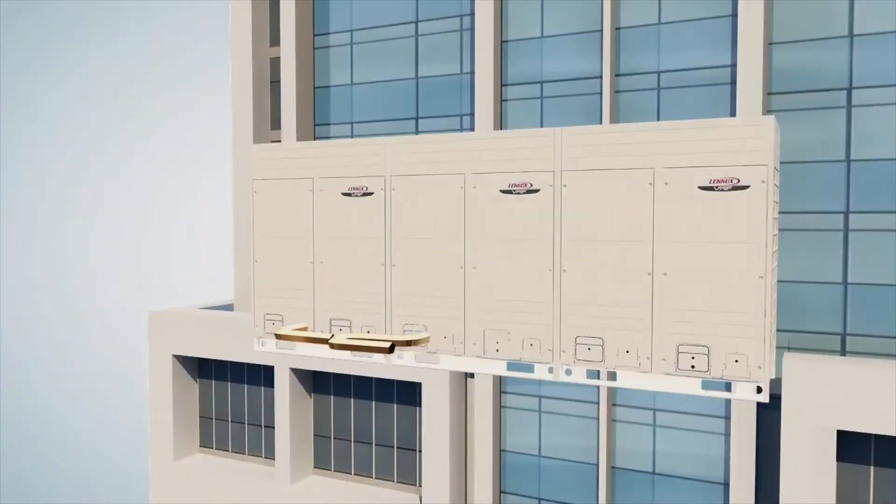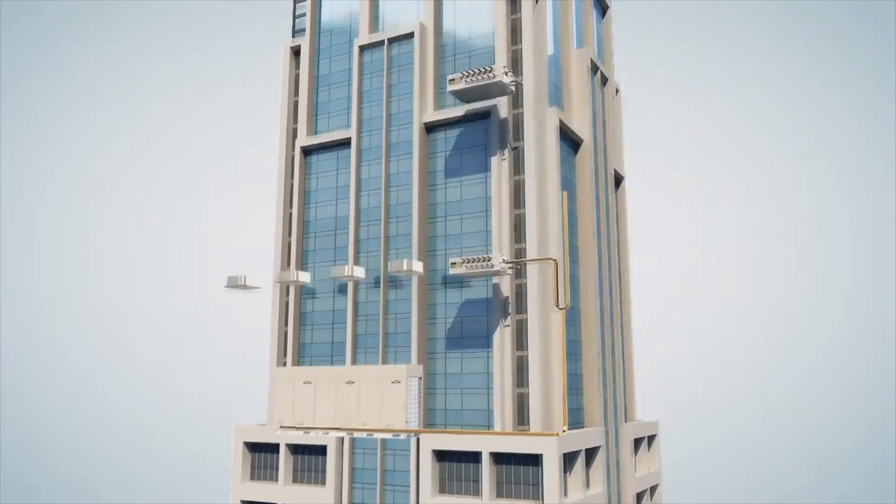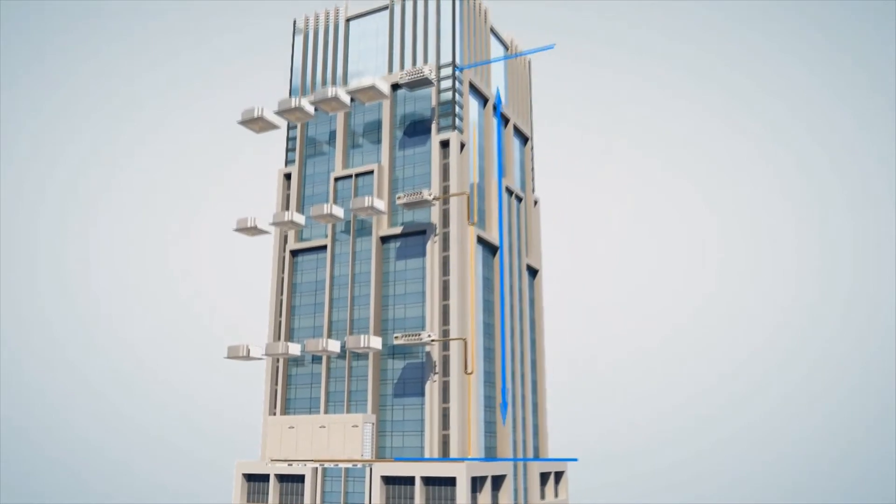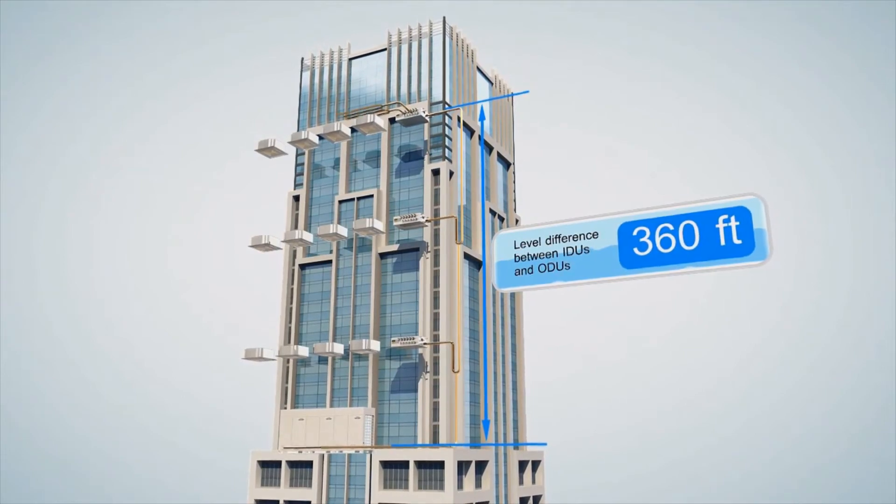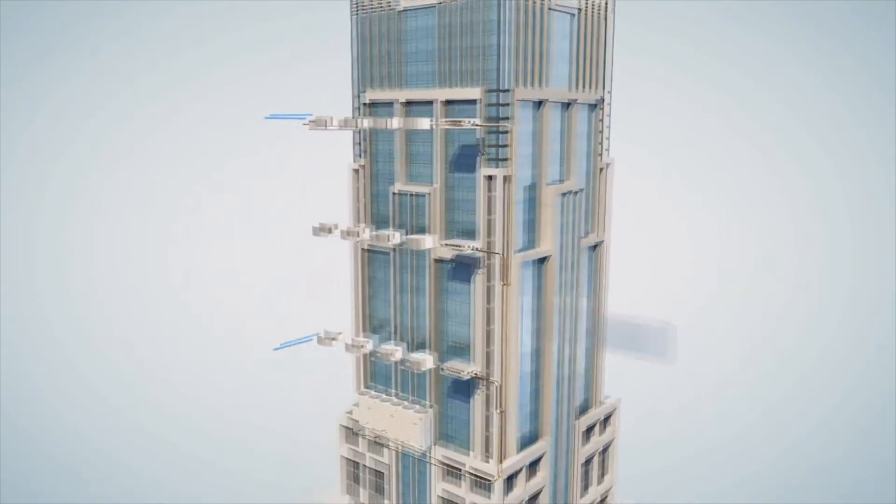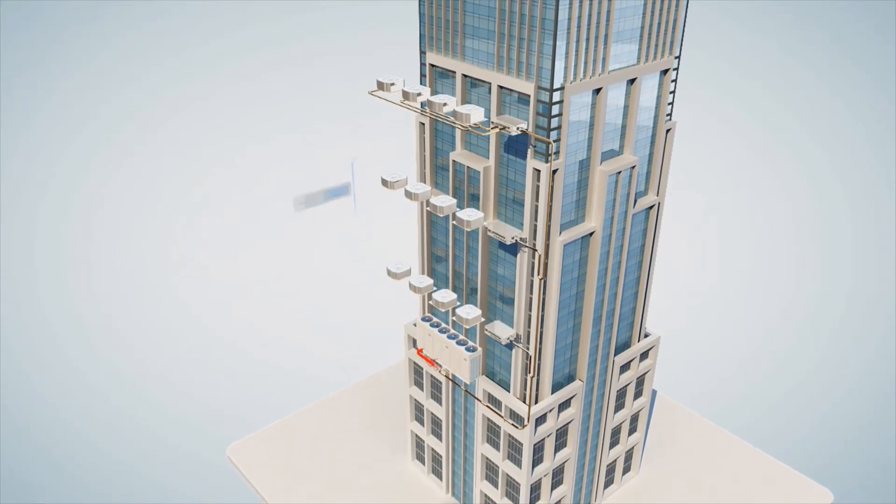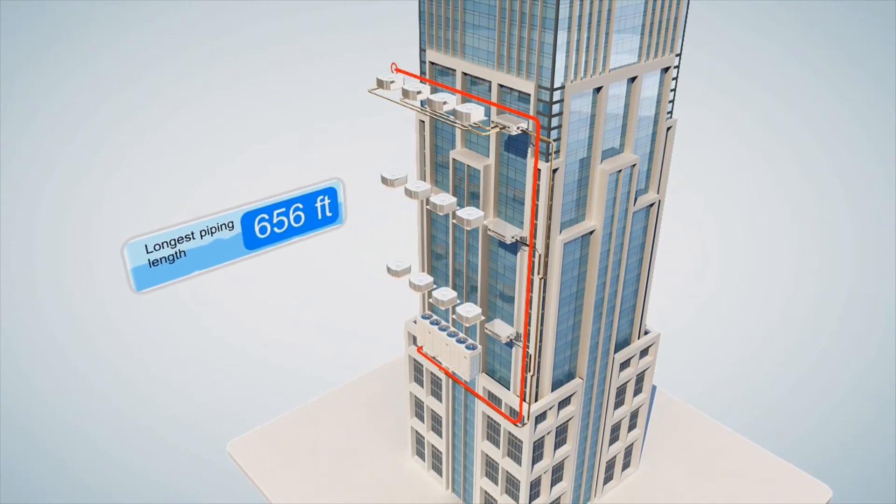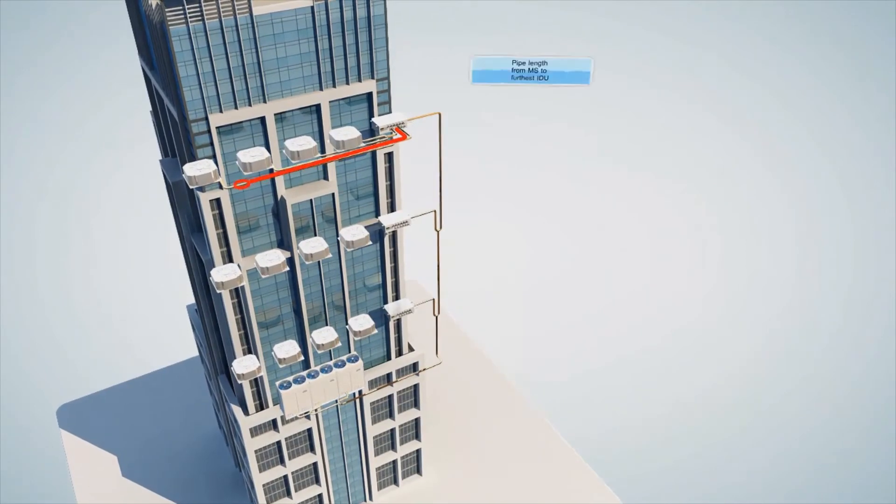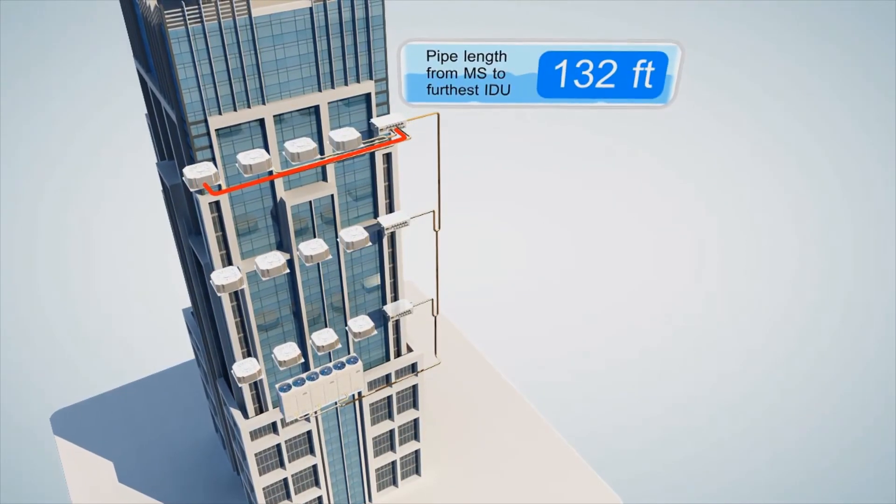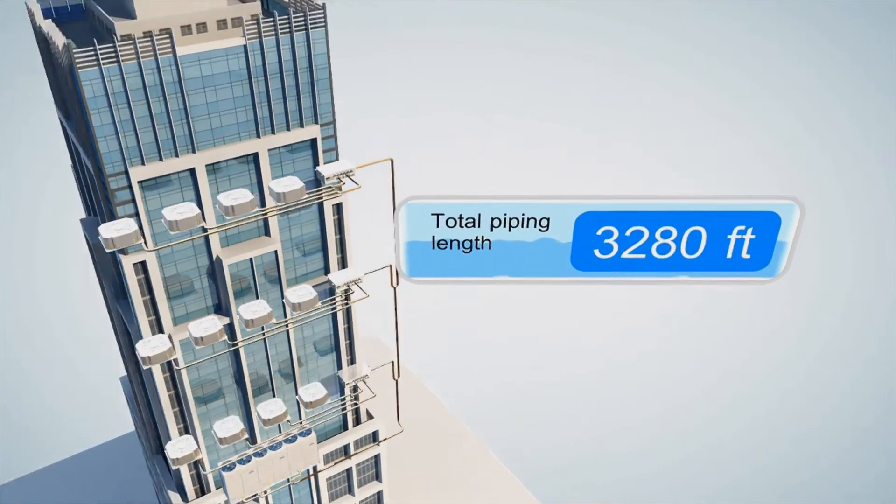The piping network of the Lennox VRF system is one of the most flexible in the industry. The elevation between the indoor and outdoor units can extend up to 360 feet, and the elevation difference between indoor units can extend up to 98 feet. The longest piping length in the system can be up to 656 feet, with the piping length from an MS box to the furthest indoor unit at 132 feet, with a total system piping length of up to 3,280 feet.